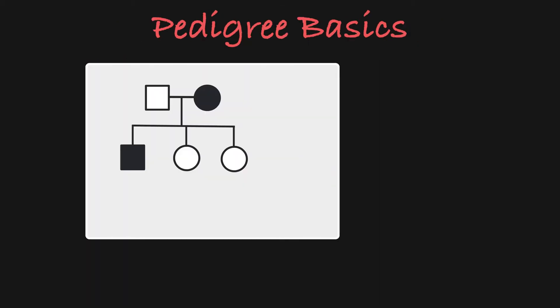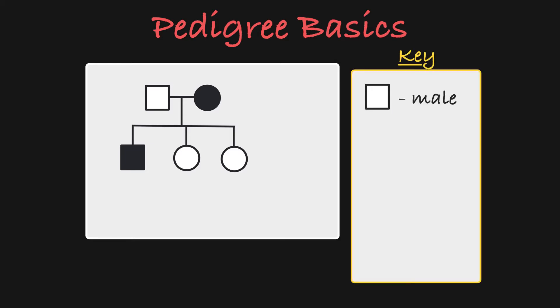So what are we looking at here? In these charts, males are represented with squares and females are represented with circles. A person of unknown sex is represented as a diamond.